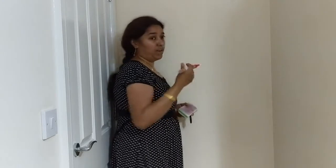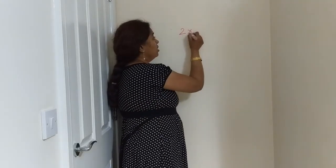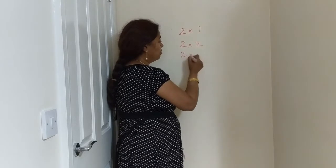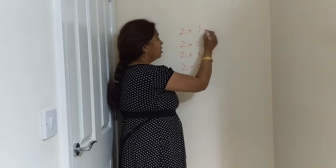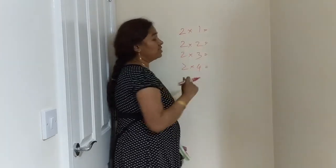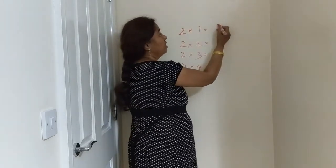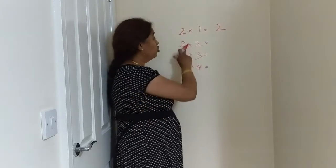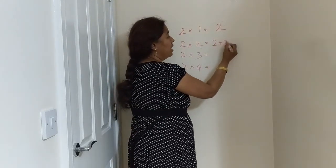Let's take some examples. 2 times 1, 2 times 2, 2 times 3, 2 times 4 — we can do it. 2 times 1 is 2. 2 times 2 is 2 add 2, which equals 4.